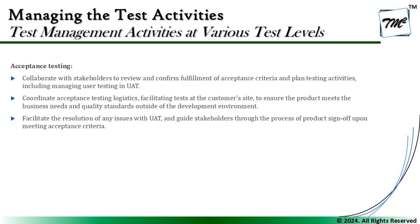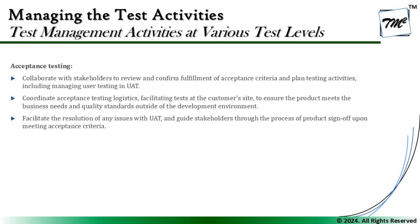The last level is acceptance testing, which is primarily from the business point of view — accepting the product with a sign-off. Here we collaborate with stakeholders to review and confirm the fulfillment of acceptance criteria, and plan testing activities including managing user testing in the UAT. The word 'plan' here means planning activities to help stakeholders perform UAT — contributing with process guidance, unique test cases we may have created, or even passing on an automated test suite to minimize their efforts.